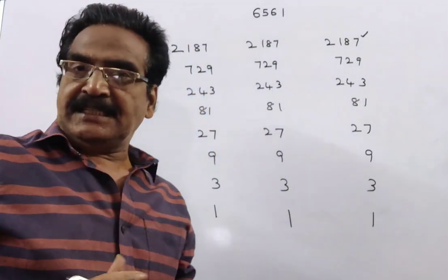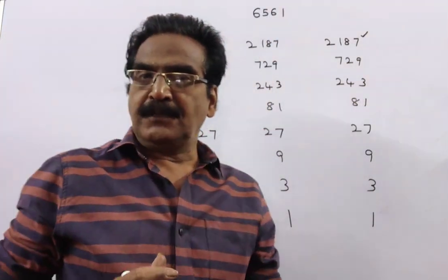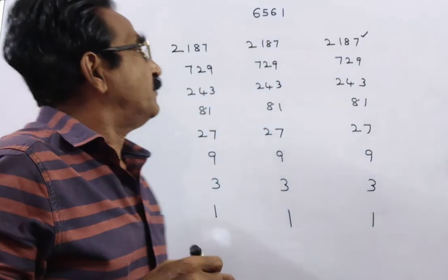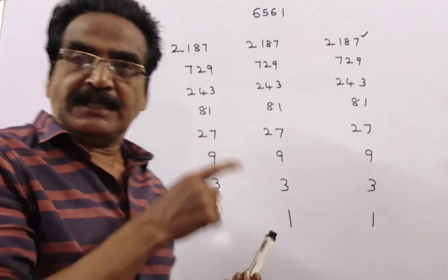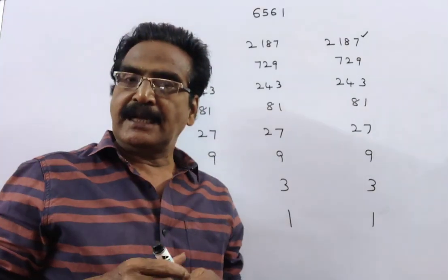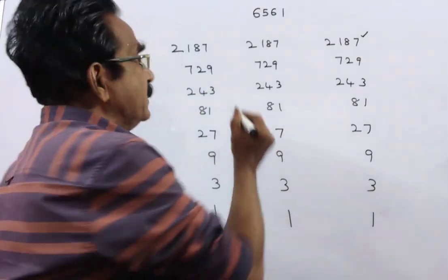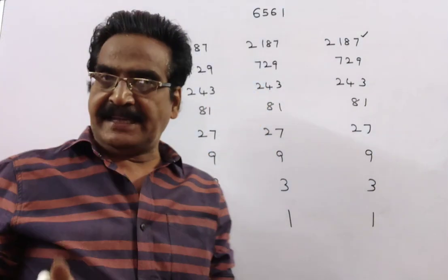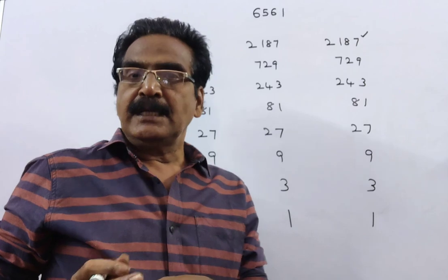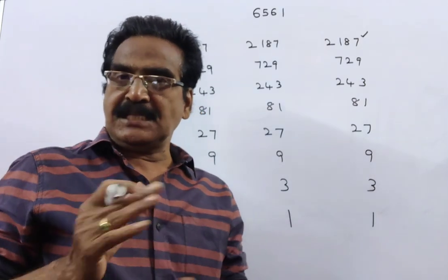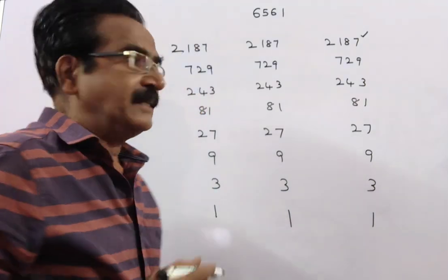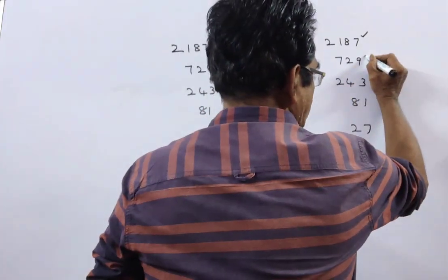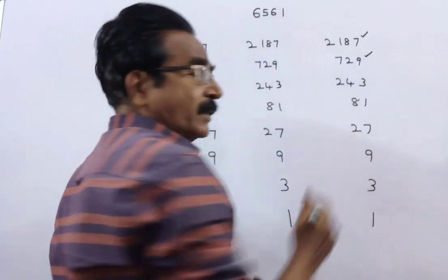Now divide the third group into three equal groups of 729 balls, and take the first two groups and weigh them. If they show the same balance, then the heavier ball must be in the third group.